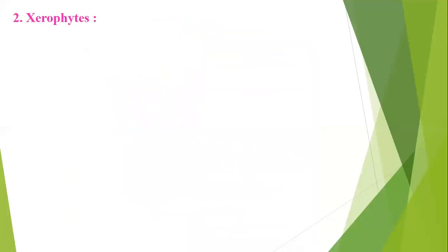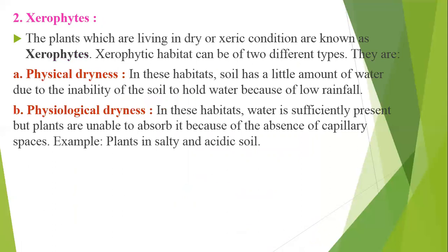The second type of ecological adaptation plants is called xerophytes. Xerophytes are the plants which live in dry or xeric conditions. Xerophyte habitat can be of two different types: physical dryness and physiological dryness.